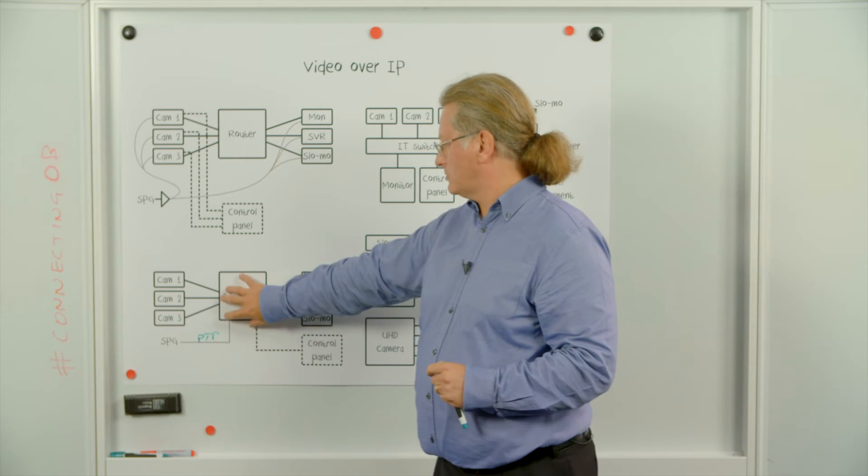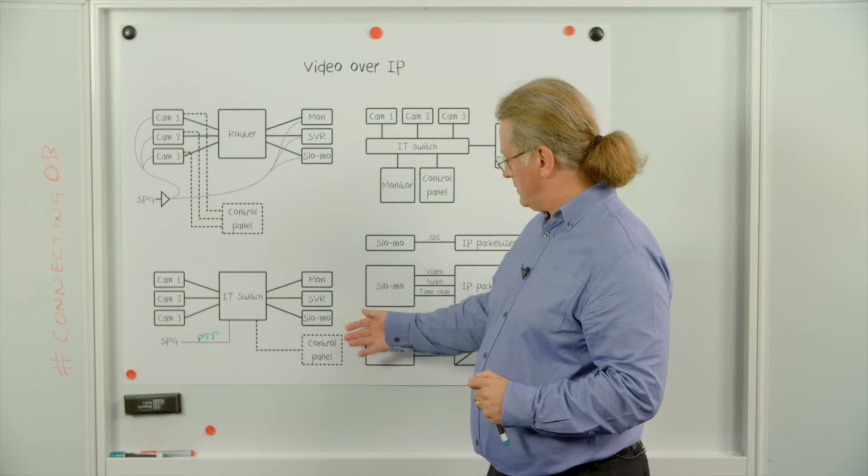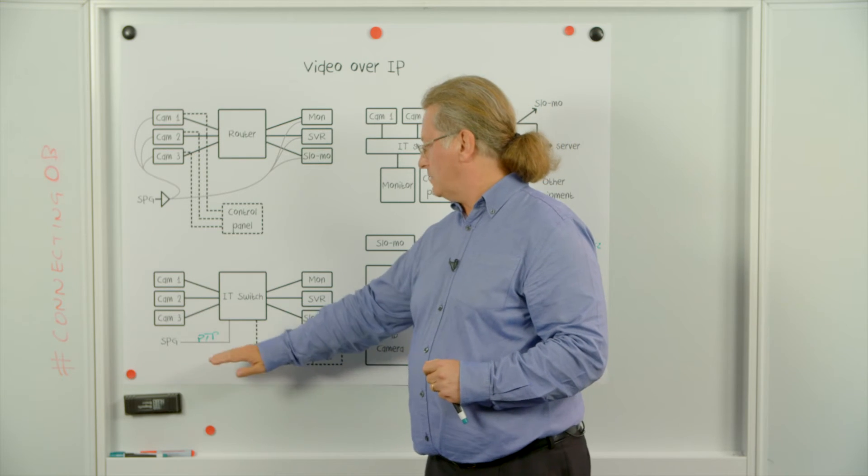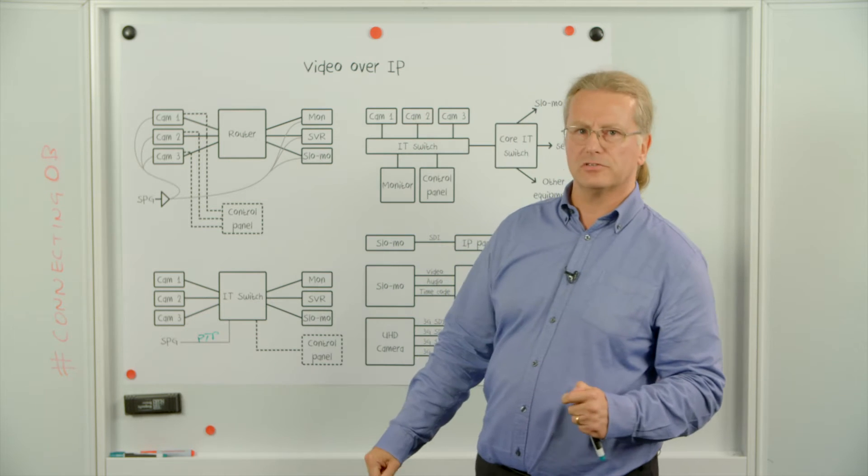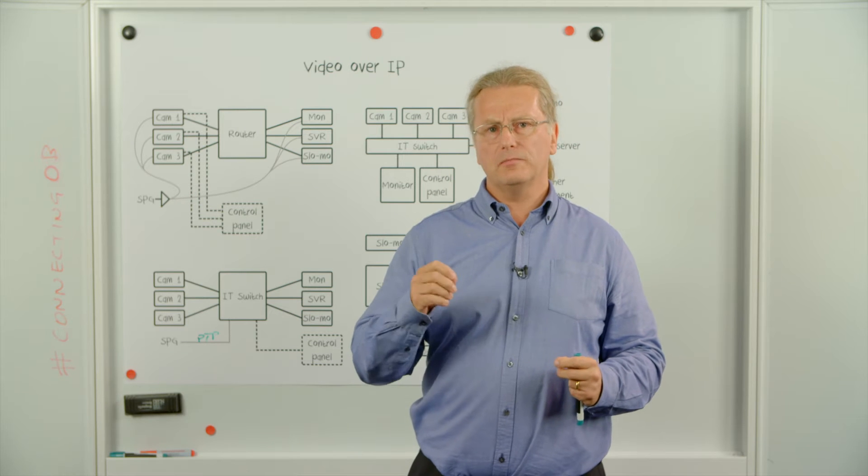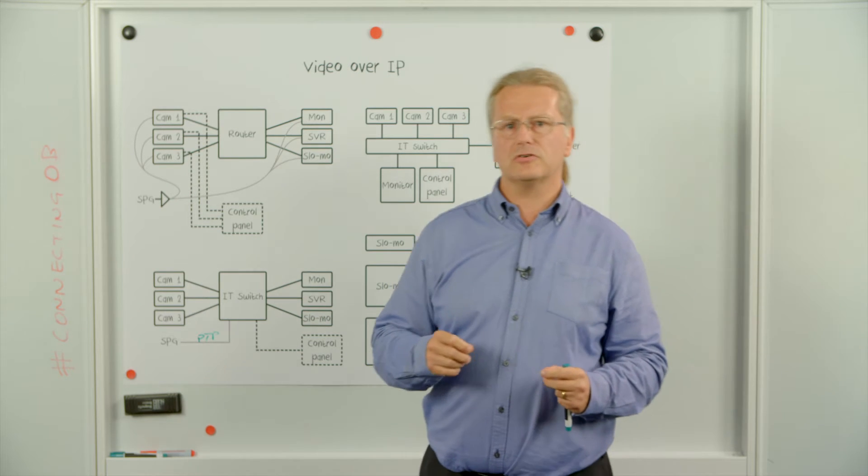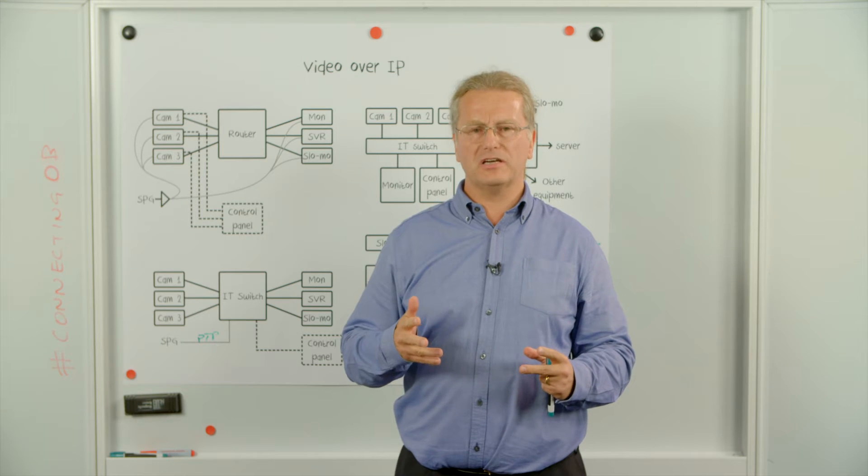So here we see a central IT switch with single cables now running from the equipment to it. A single cable from the control panel and, more importantly, a single cable from the SPG carrying the reference signal. Of course, using PTP to lock the equipment in an OB means there is no longer a requirement to distribute separate reference signal. So this gains the truck designer more space where the black and burst DAs would have gone.